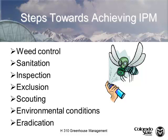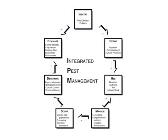What are the steps towards achieving integrated pest management in the greenhouse? There are seven steps: weed control, sanitation, inspection, exclusion, scouting, environmental conditions, and eradication as the last. I like to recommend that people think about IPM in this order. Integrated pest management is a very connected practice — you can't practice one part and be successful. You have to include it all: manage it, use resistant cultivars, define your cultural practices, learn how to scout, determine action steps, and evaluate. A good greenhouse grower does all of these things.